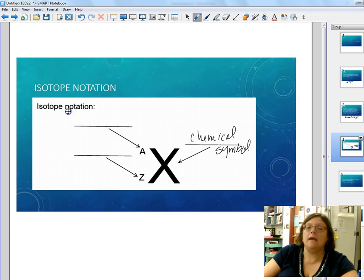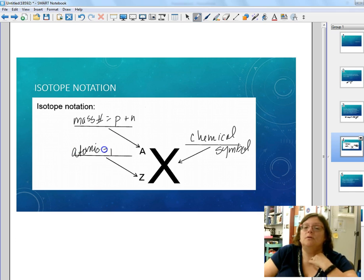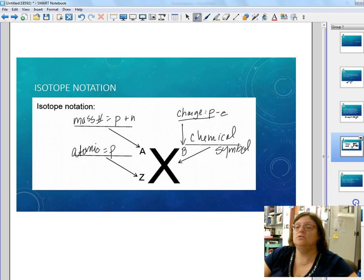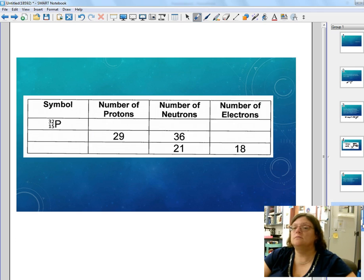Where A is what we call the mass number, the mass number is equal to protons plus neutrons. This is different from the mass on the periodic table which is an average. The Z gives us the atomic number, which is equal to the number of protons. There's one more thing, if we have an ion, the charge goes up here. The charge is equal to protons minus electrons. Mass number equals protons plus neutrons and the charge is equal to protons minus electrons.